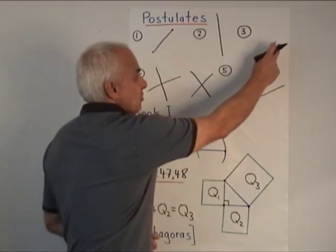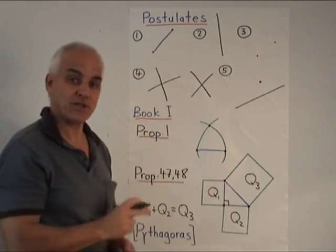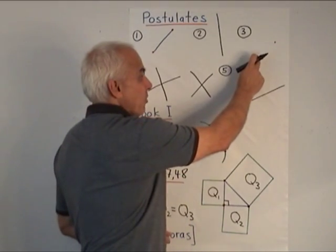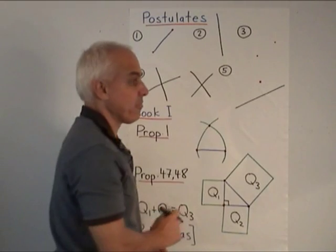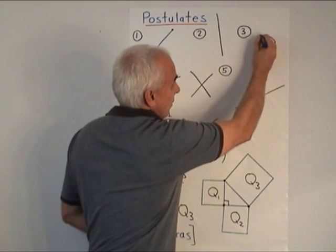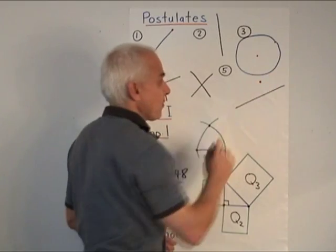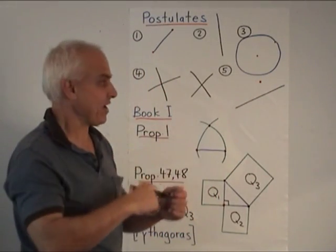The third, if you have two points, then you can always draw a circle whose center is one of the points going through the other point. Of course, the Greeks used a compass for that.